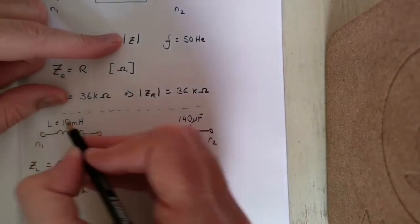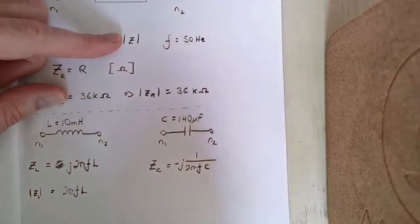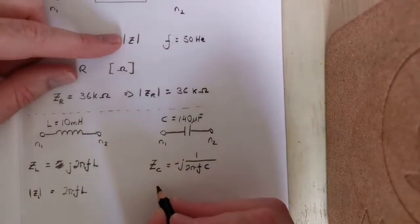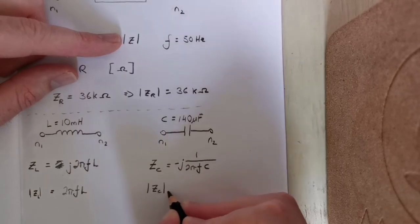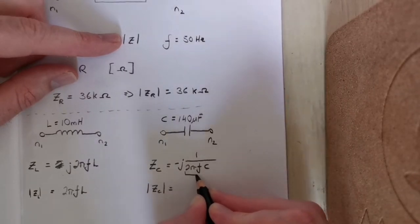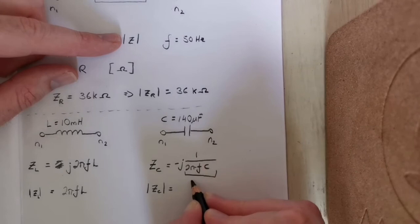If you want to know the magnitude of the capacitor, it's just going to be 1 over 2 pi f C.